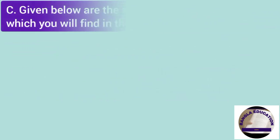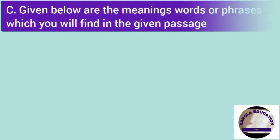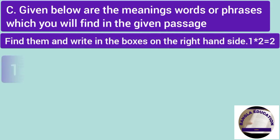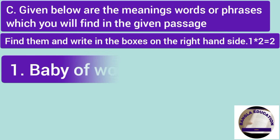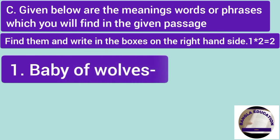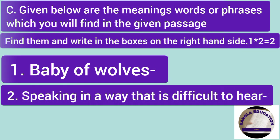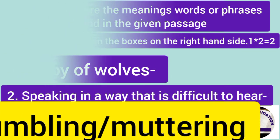Next question is, C. Given below are the meanings, words or phrases which you will find in the given passage. Find them and write in the boxes on the right hand side. So, one is, baby of wolves, that is, answer is, cubs. And two, speaking in a way that is difficult to hear. Its answer is, mumbling or muttering.